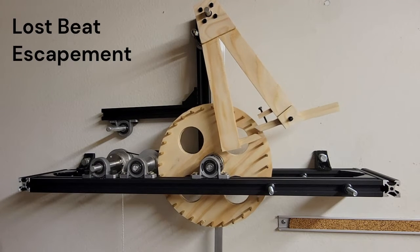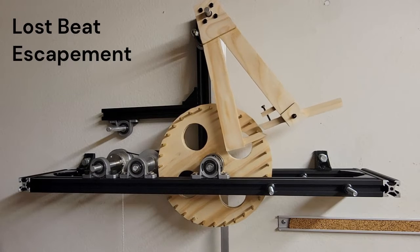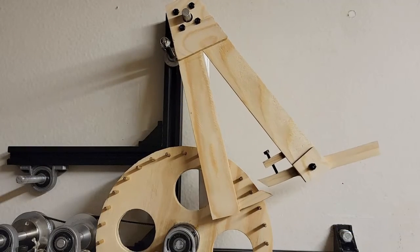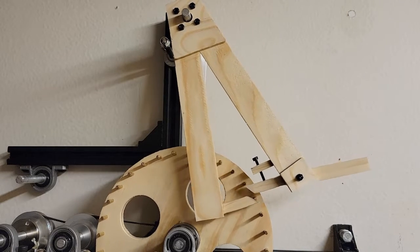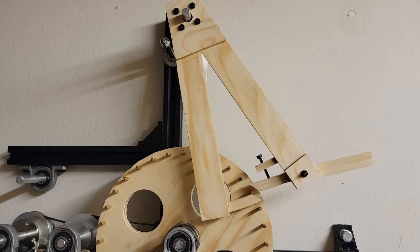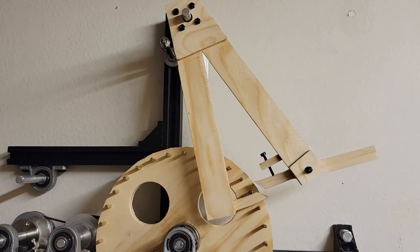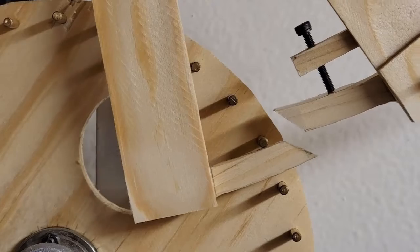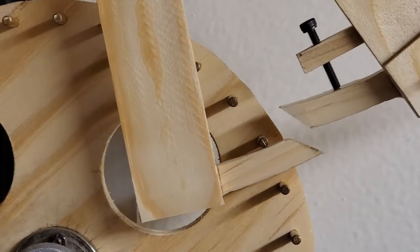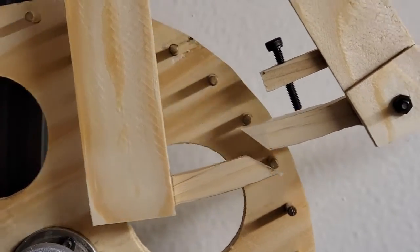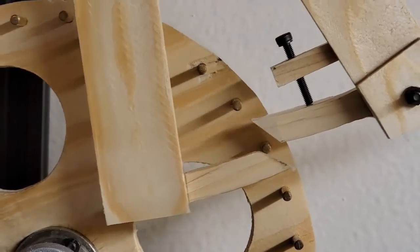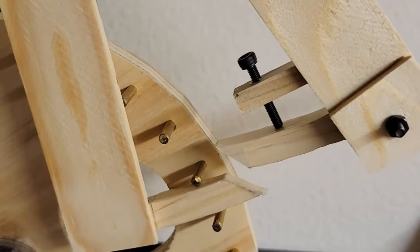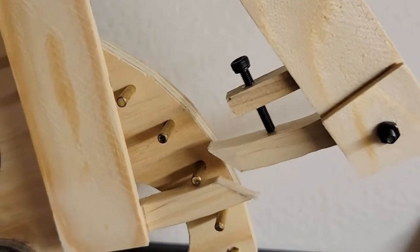The similar Lost Beat escapement has only one pallet, so it can be larger. The Lost Beat has a simple rocking latch that allows the pin onto the pallet only in one direction. The only thing difficult about this build was cutting the inner curved surface where the pin slides. It needs to be a circular arc about six inches in radius. I ended up doing the final curve on my drum sander.